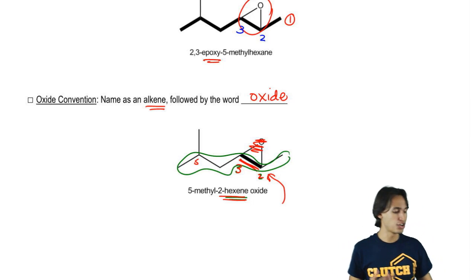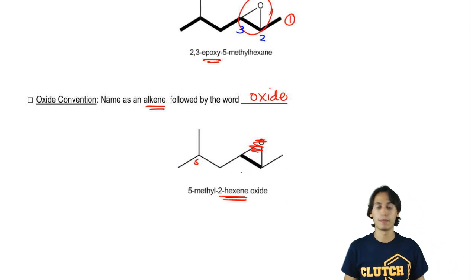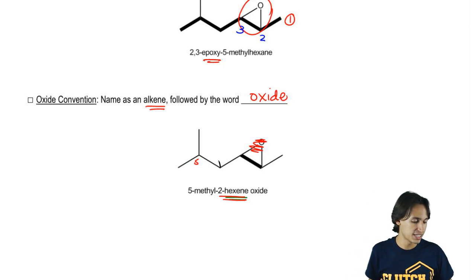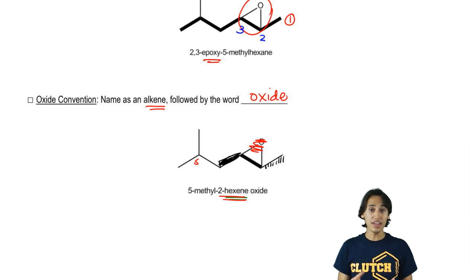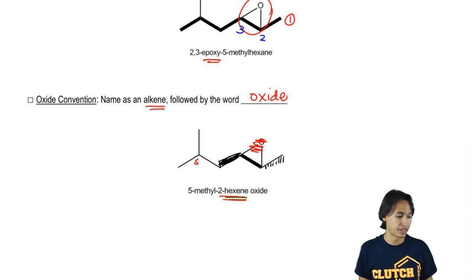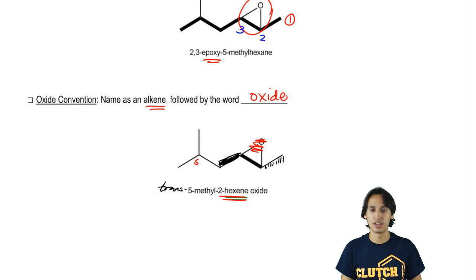So what that means is notice that these groups don't have stereochemistry. But if I had included, let's say, that this was facing towards the front and this was facing towards the back, then that would actually show me the stereochemistry whether these groups are cis or trans to each other. If they're trans on the epoxide, that means that they were originally trans. So then this would become trans-5-methyl-2-hexene oxide. Same goes with the epoxy nomenclature.